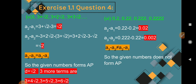Question 5: 3, 3+√2, 3+2√2, 3+3√2. A2 minus A1 = (3+√2) minus 3 = √2. A3 minus A2 = (3+2√2) minus (3+√2) = 2√2 minus √2 = √2. Common difference is the same, so A3 minus A2 equals A2 minus A1. The given numbers form an AP with D = √2. Three more terms are: 3+4√2, 3+5√2, 3+6√2.